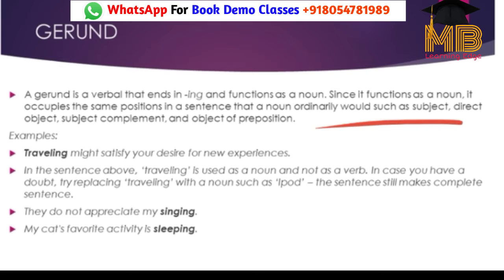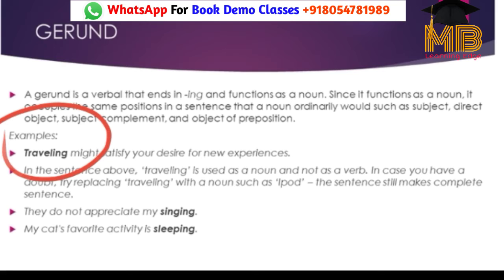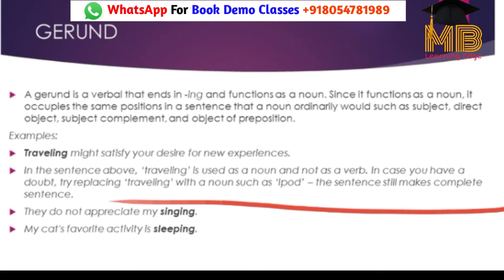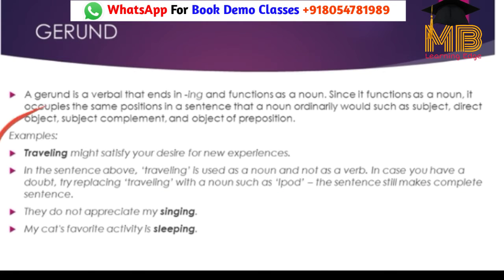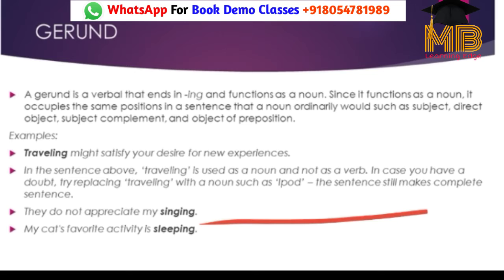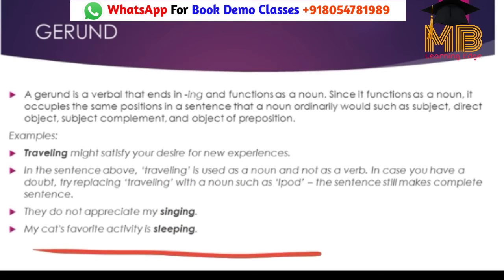For example: 'Traveling might satisfy your desire for new experiences.' Here, traveling is being used as a noun and not as a verb, because it is something that might satisfy. If you have any doubt, replace 'traveling' with any noun like 'iPod' and you'll see the sentence still makes sense. Similarly, 'They do not appreciate my singing' — singing is used as a noun. 'My cat's favorite activity is sleeping' — same idea.